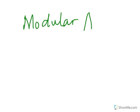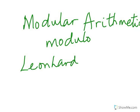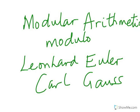Good morning students. My name is Samuel Chukwu-Emeca. In this video we shall talk about modular arithmetic and the concept of modulo. There were some scientists who were prominent in this study, among them Leonhard Euler, a Swiss mathematician, and German mathematician Carl Gauss. I'm not sure I'm pronouncing their names right, but they are prominent in this study of modulo. So what exactly is modulo?